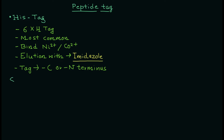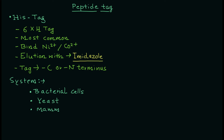You can use the histidine tag at the C-terminal or the N-terminal. There are different expression systems you can use — meaning different cell types. You can use bacterial cells such as E. coli, yeast such as Saccharomyces, mammalian cell lines, or insect cell lines. This is the most commonly used peptide tag to purify proteins.